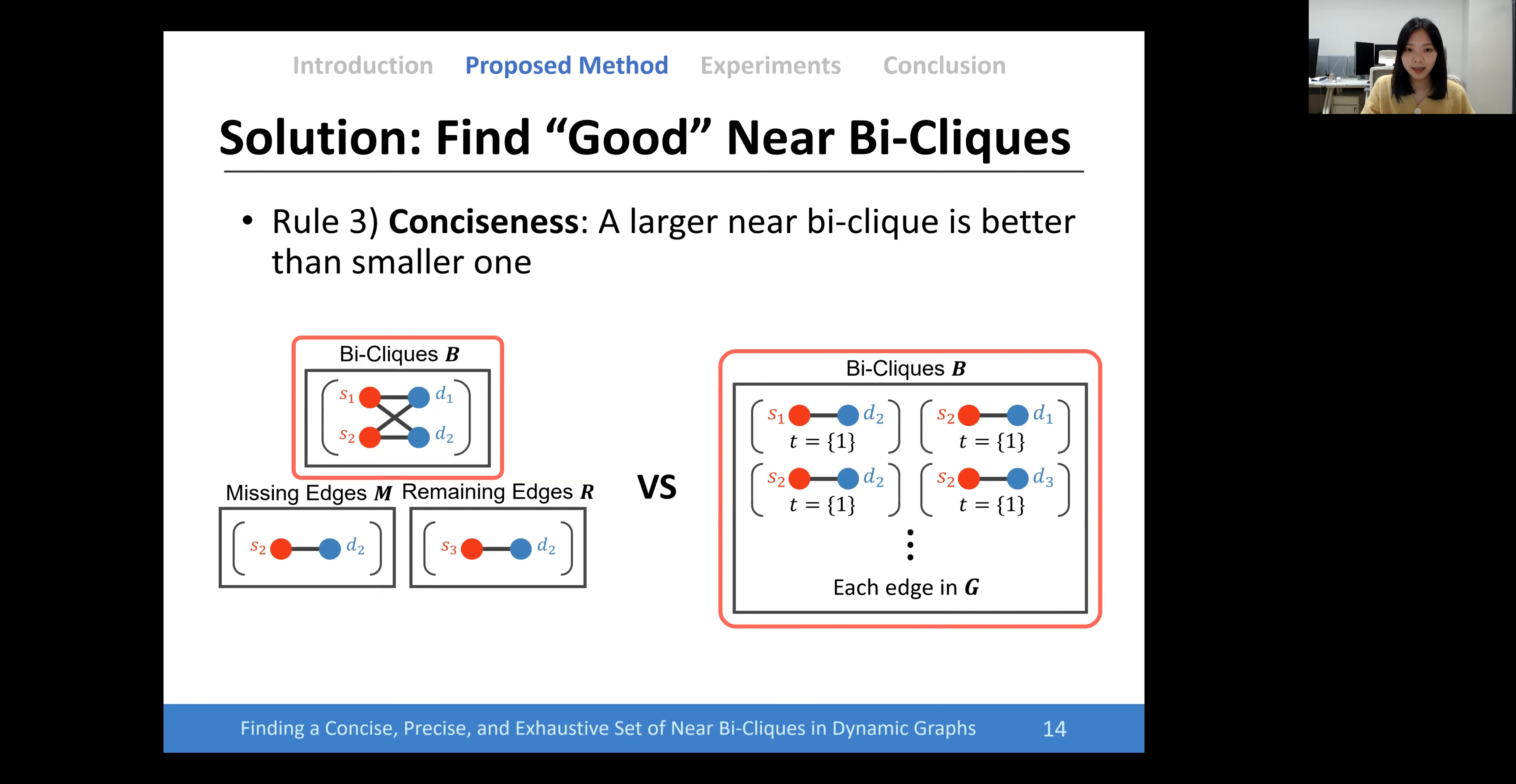In this case, the right option has neither missing edges nor remaining edges. Thus, we define the third rule, conciseness, which means a larger near bi-clique is better than the smaller one.